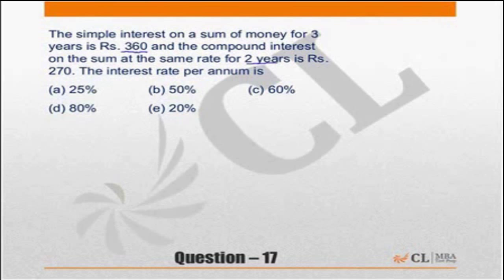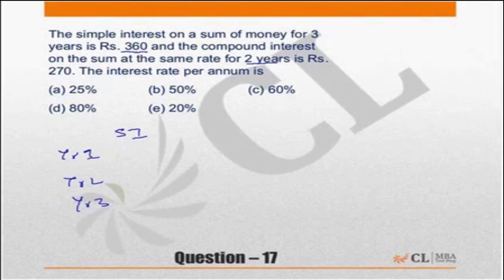For simple interest, year 1, year 2, year 3 — it will be the same, 120 each year. Simple interest is fixed every year.